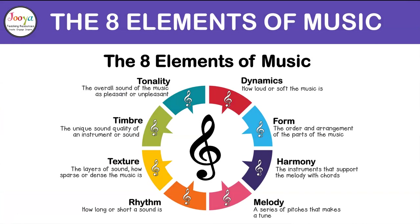The eight elements of music and their definitions are: dynamics means how loud or soft the music is; form refers to the order and arrangement of the parts of the music; harmony, which we are looking at today, is the instruments that support the melody with chords; melody is a series of pitches that makes a tune; rhythm is how long or short a sound is; texture is the layers of sound and how sparse or dense the music is; timbre refers to the unique sound quality of an instrument; and tonality is the overall sound of the music as pleasant or unpleasant.